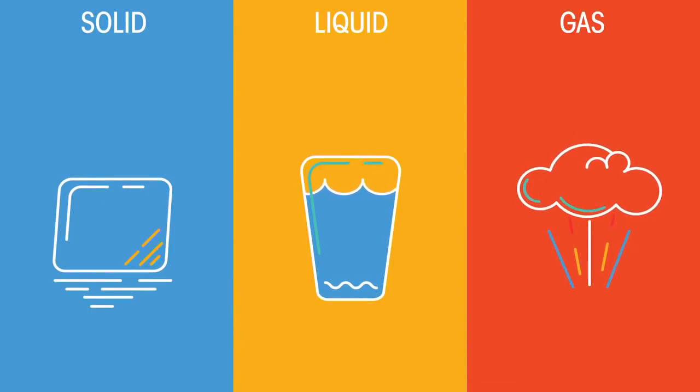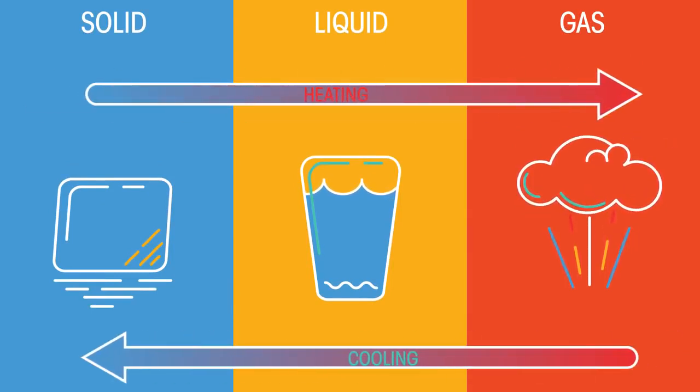Matter can transition between the three states when heated or cooled. But why is heat key in all of this?